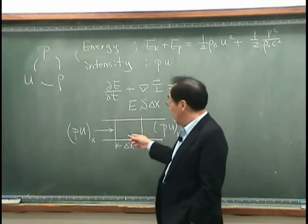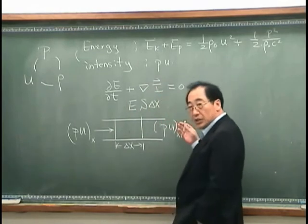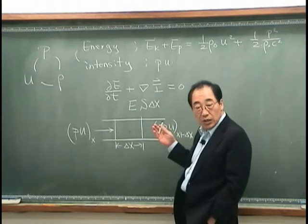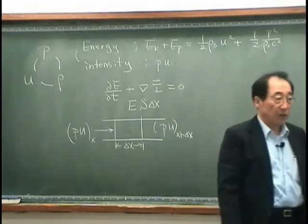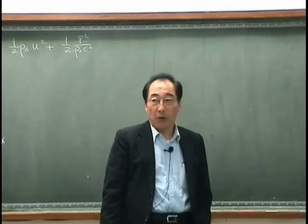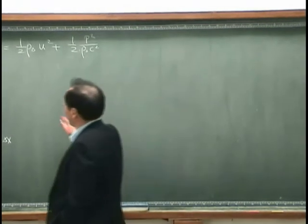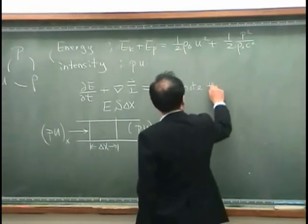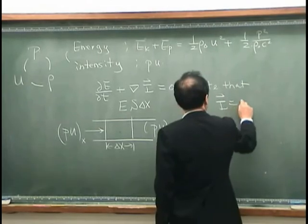Net energy in minus net energy out, that is minus gradient of acoustic power or intensity. Note that I is PU, that is a vector.